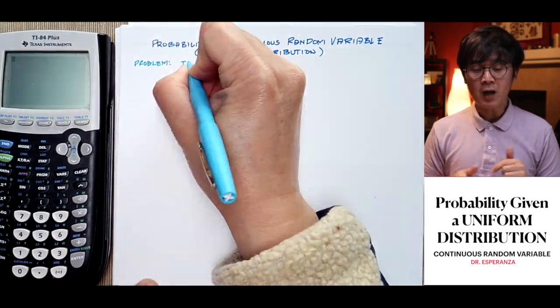we're going to be working on a lesson on statistics, specifically on continuous random variables. For continuous random variables, we have normal distribution and uniform distribution. Today, we're going to work on uniform distribution, answering probability problems involving uniform distribution. For our problem,